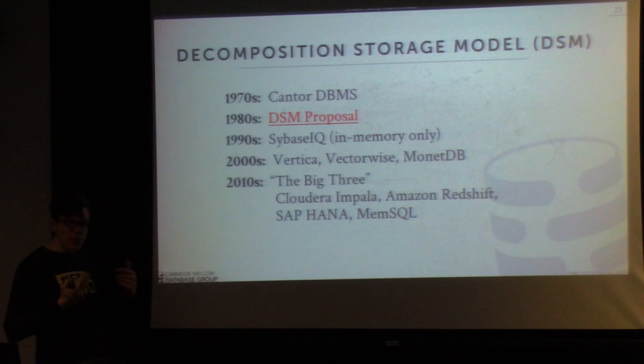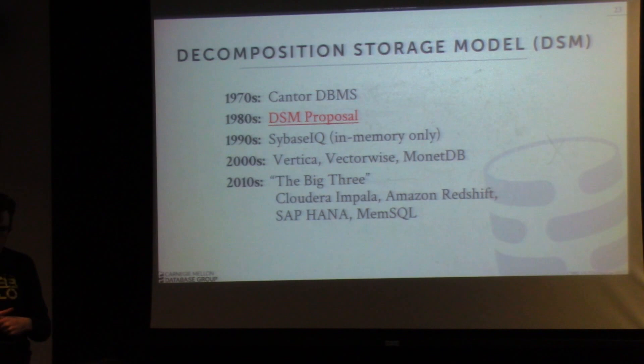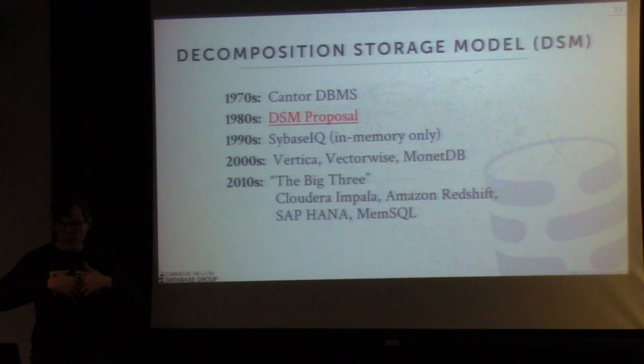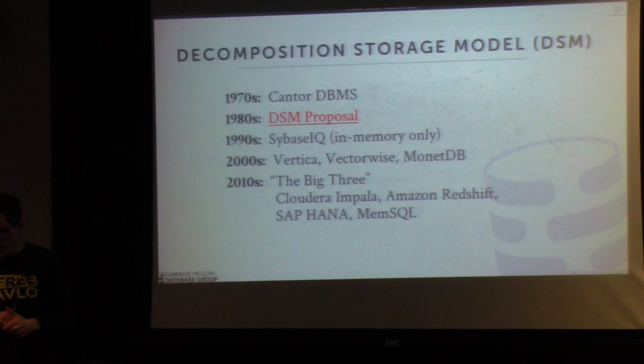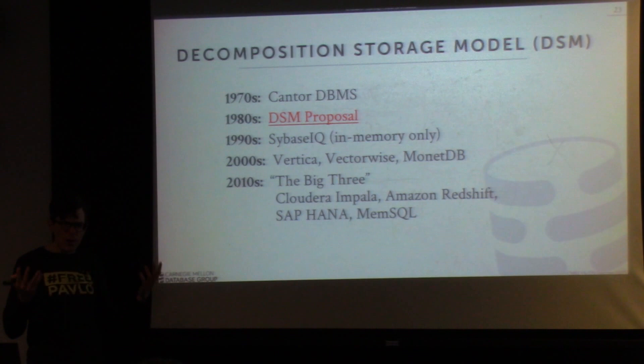The column store approach — DSM — is not new; it's been around since the 1970s. The first database system that could claim to be a column store was something called Cantor, from the Swedish defense ministry in the 1970s. There are only two papers describing it, and people often overlook Cantor as the first column store because the papers talk in terms of files rather than databases. They were doing transformations of files from row-oriented to column-oriented format, but the high-level idea is exactly the same as the DSM approach.